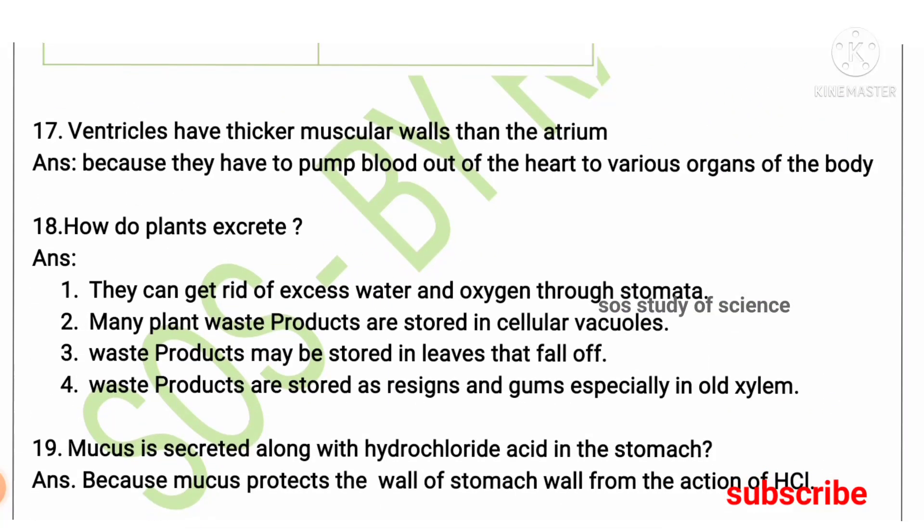Pressure is high in the arteries as blood moves away from the heart, and low in the veins as blood returns. Ventricles have thicker muscular walls than the atrium because the ventricles, located in the lower part of the heart, pump blood out to different parts of the body.